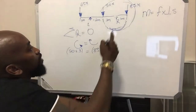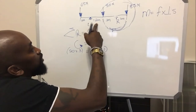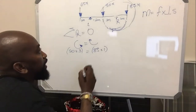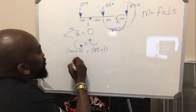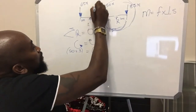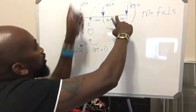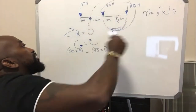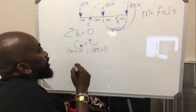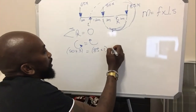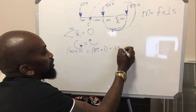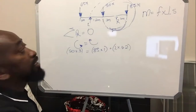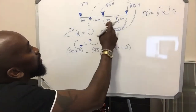Next, L is 3 plus 1.2, which is 4.2 meters away. The value of L is what we need to calculate. L going upwards looks very much clockwise — if you put a string attached to it, it tends to go that way, which is clockwise. So it comes on the clockwise side: L multiplied by 4.2 meters.